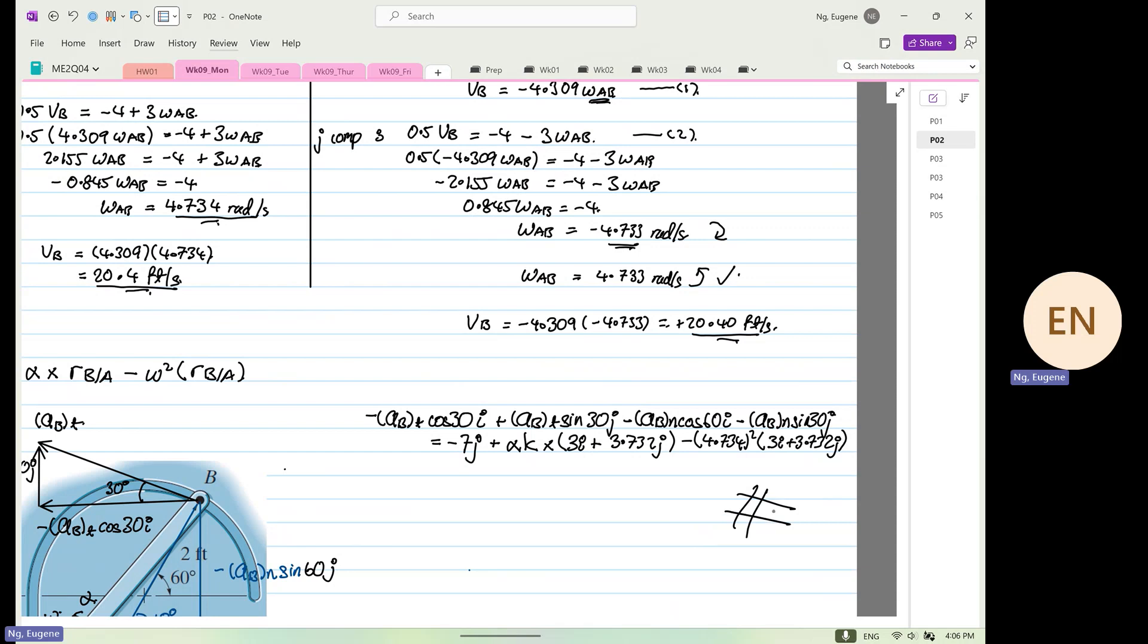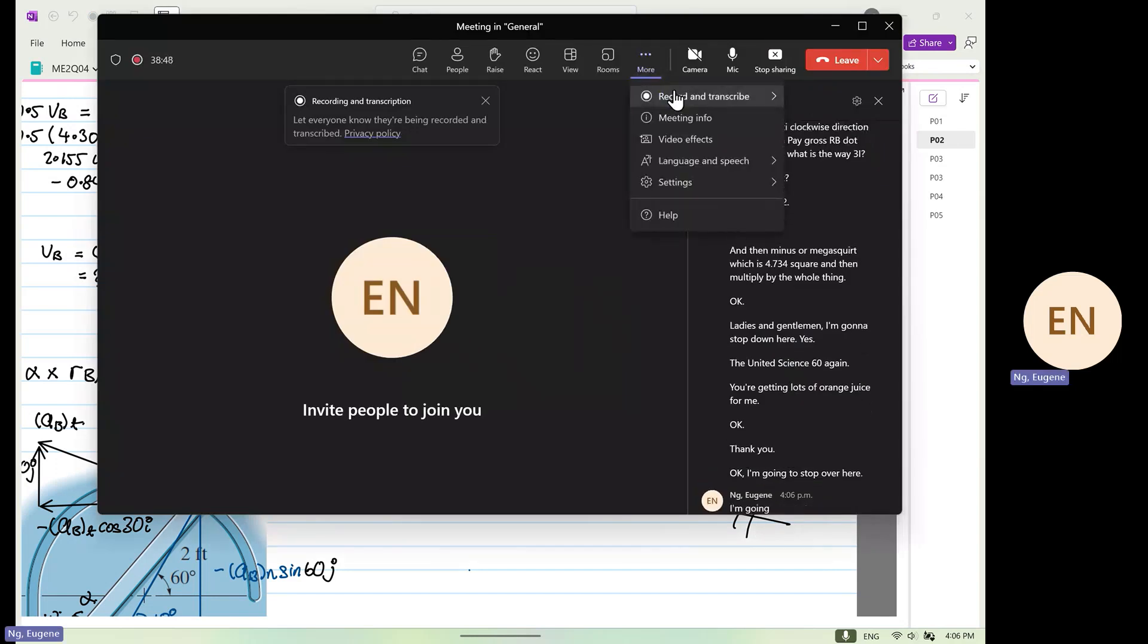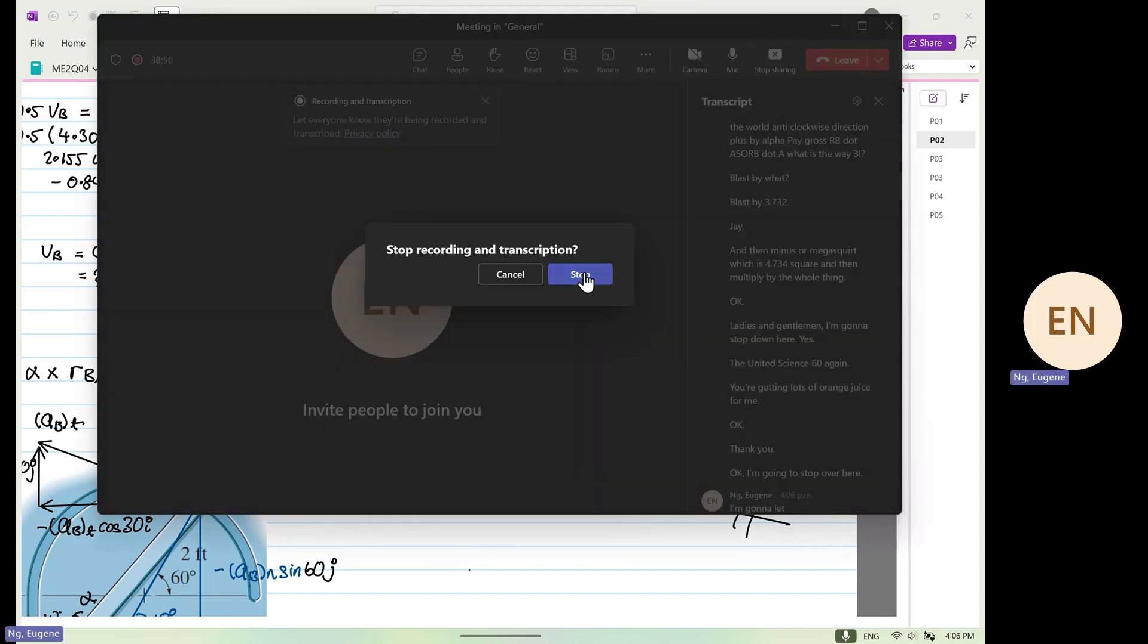Ladies and gentlemen, I'm going to stop down here. Did I? Ah, sine 60 again. You're getting lots of orange juice from me. Thank you. I'm going to stop over here. I'm going to let the two cubes...